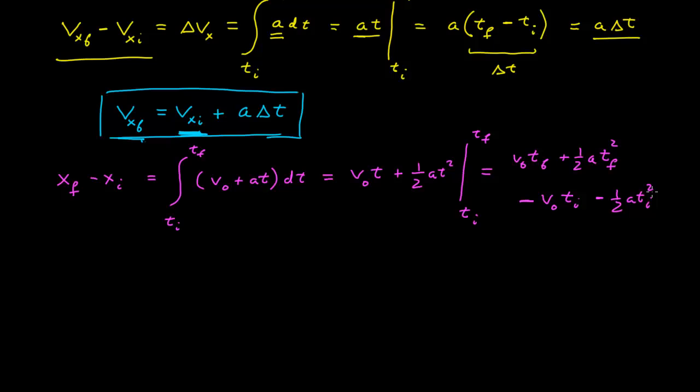So if I were to now put all this together here into something, combine these terms, I get xf equals x i plus I'll recombine my v naught tf minus t i plus one-half a tf squared minus one-half a t i squared.